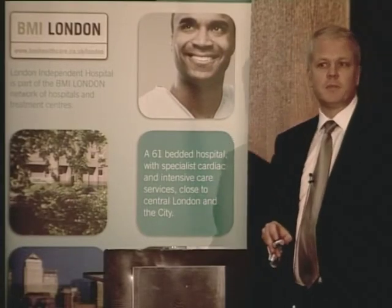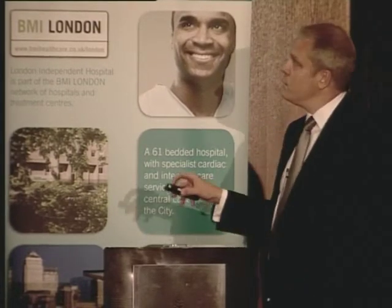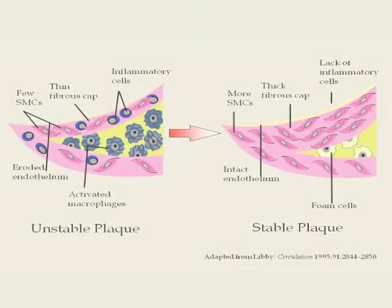Why do plaques rupture? It's because they're biologically different from plaques that don't. The key factor is the cap. This is the plaque that you don't want — it has a thin, inflamed roof over the atheromatous gruel inside it. The plaque that you do want has a thick cap, protecting it from rupture and associated thrombus.